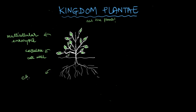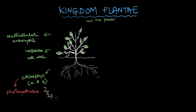Plants also have chlorophyll, a pigment which plays a huge role in photosynthesis — the process by which plants make their own food. All plants have chlorophylls A and B for this purpose, which means all plants are autotrophic. However, some plants also seek nutrition from other organisms, like the Venus flytrap, for example, which traps insects and consumes them for nutrition.